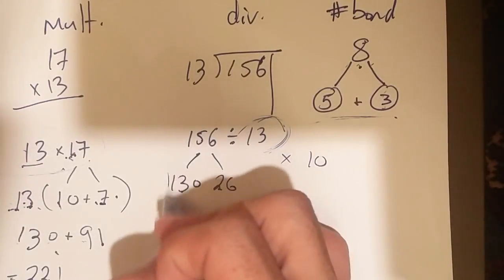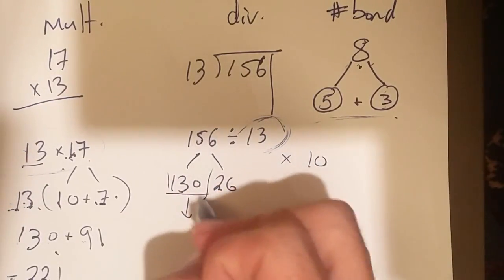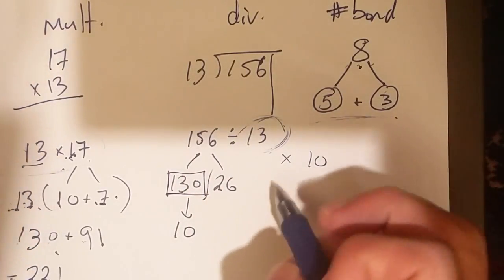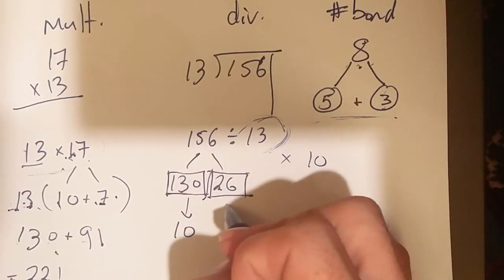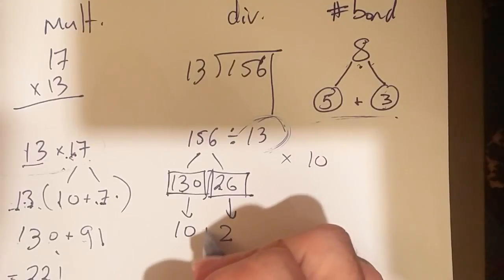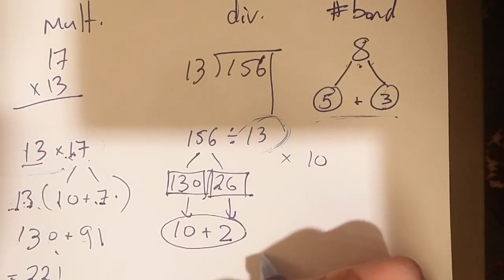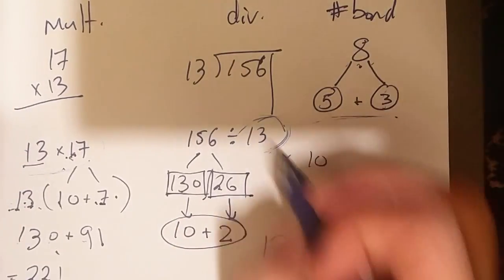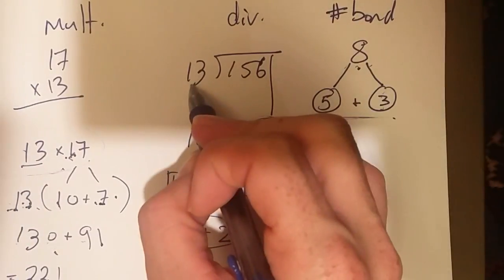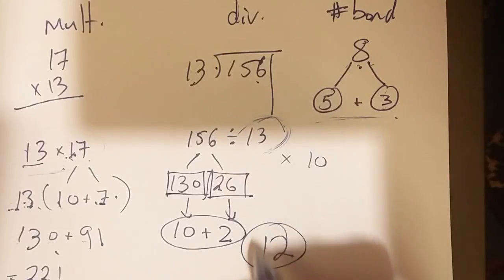Well, I already know that 130, how many groups of 13 is 130? That's 10 groups of 13. And 26. How many groups of 13 is 26? That's two of them. So, how many groups I have all together? I have 12. And if I were to go through this whole thing, I would find out that 13 goes into 156 12 times.